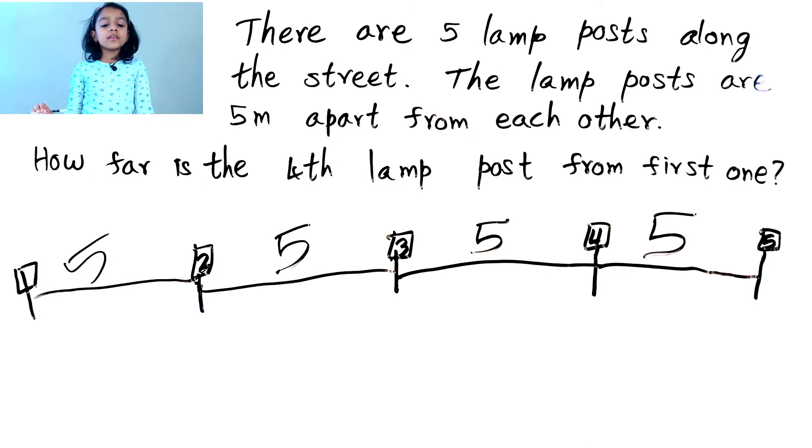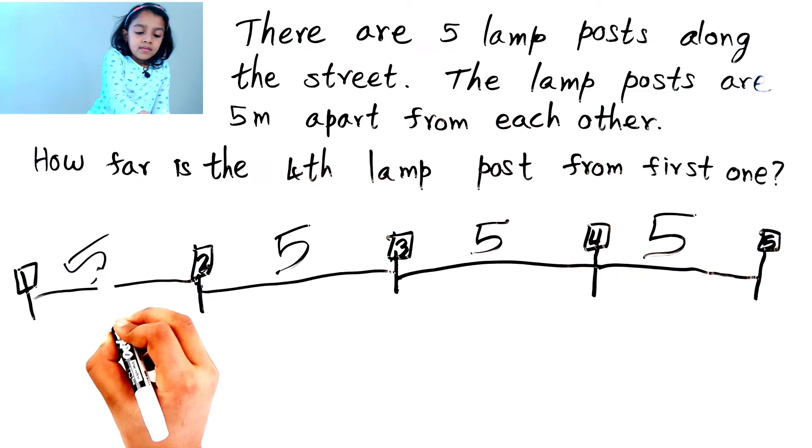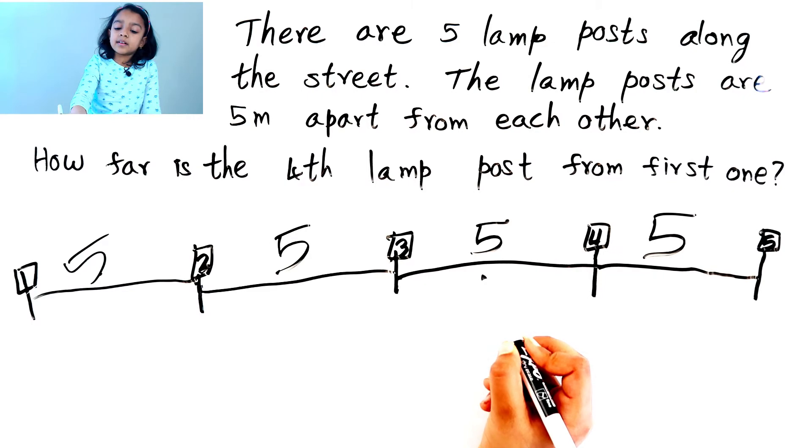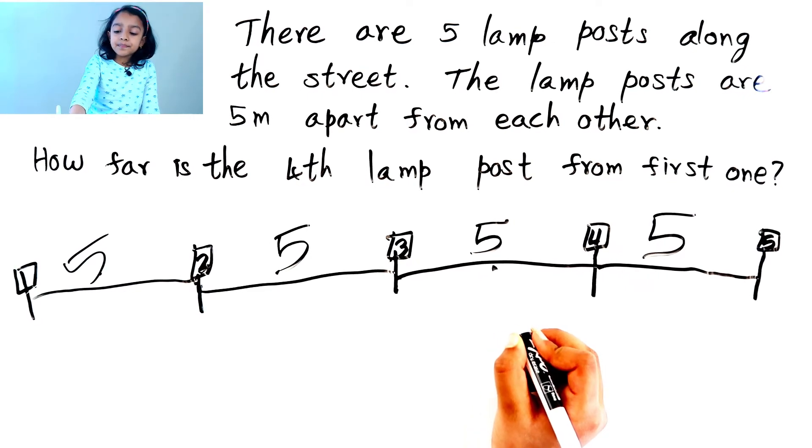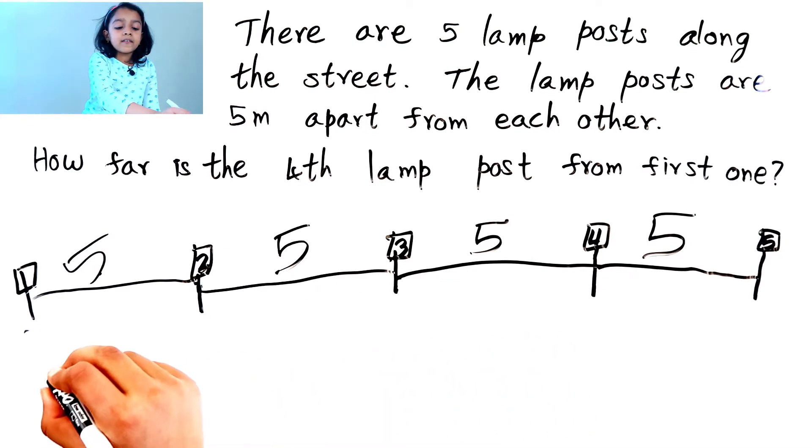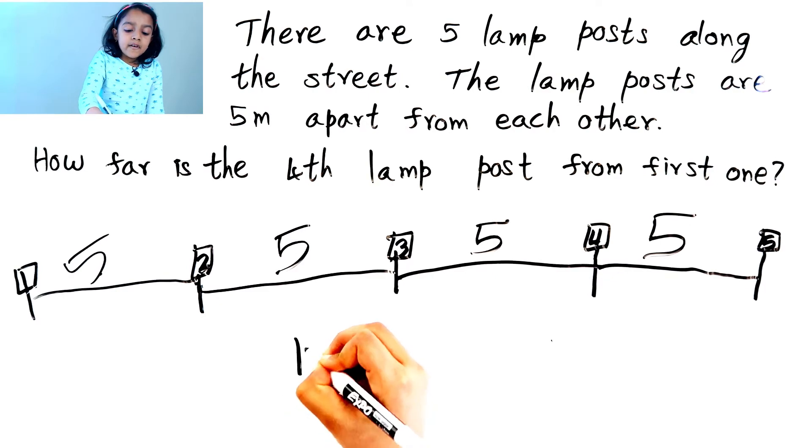How far is the fourth lamppost from the first one? Okay, so five plus five equals ten, plus five equals fifteen. So the distance between the first lamppost to the fourth lamppost is fifteen.